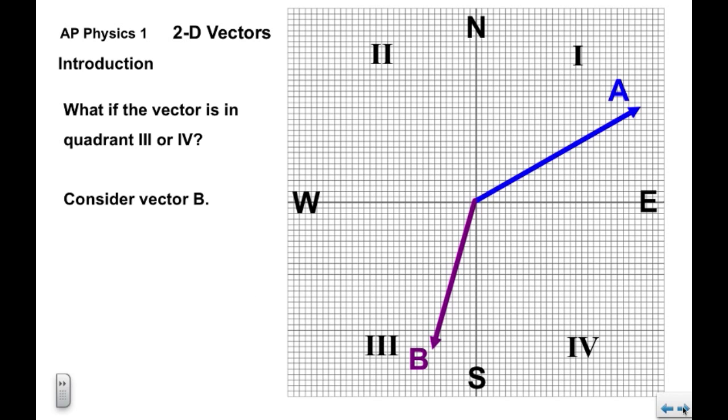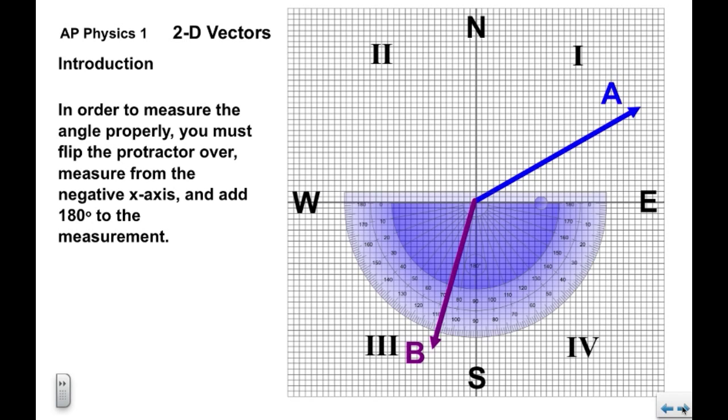Now vector A was easy because it was in quadrant one. What if it's in quadrant three or four? So we'll consider vector B, this purple one here. In order to measure the angle properly, you've got to flip the protractor over, and measure the angle down from the negative x-axis. And then add 180 degrees, which is represented by the top half here.